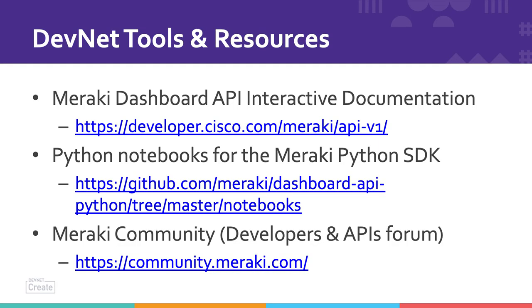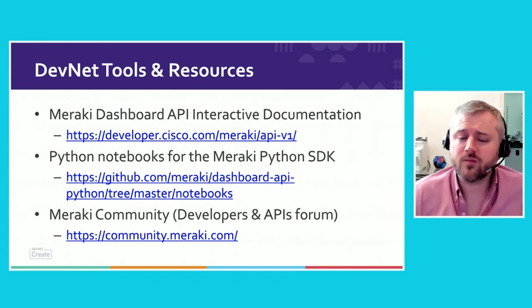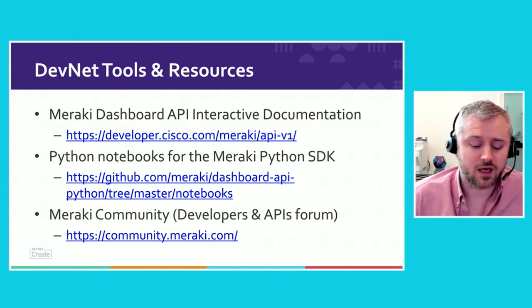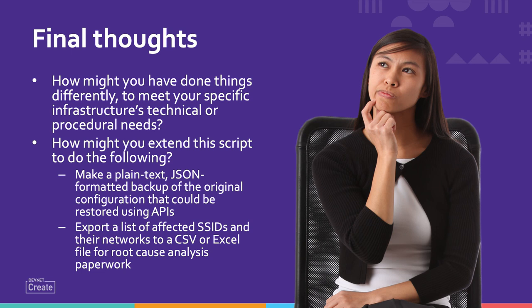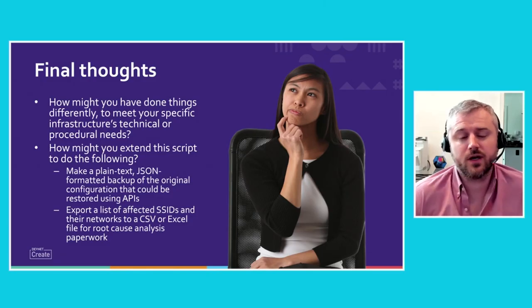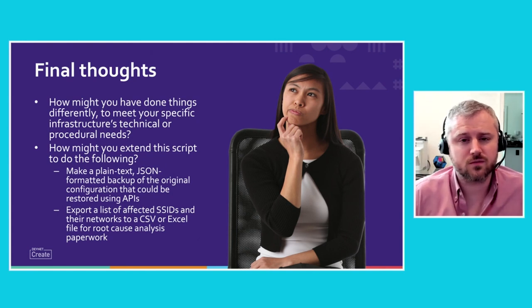If you'd like to run this specific code that we reviewed today yourself, you certainly can. You can find the source code on our GitHub under the Python notebooks folder. Under the Python SDK notebooks folder, you'll find a readme that gets you up and going with Python notebooks in general, and you'll find the code we used here in that repository. In writing the application and reviewing the code in this demonstration, consider how you might have done things differently for your own environment, your own style, your own procedural needs, whatever compliance or code management system you're using.